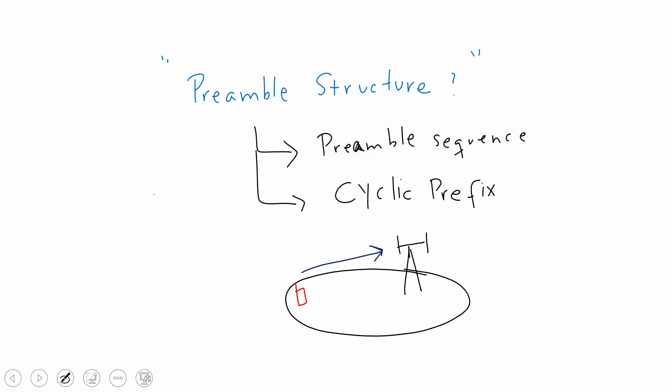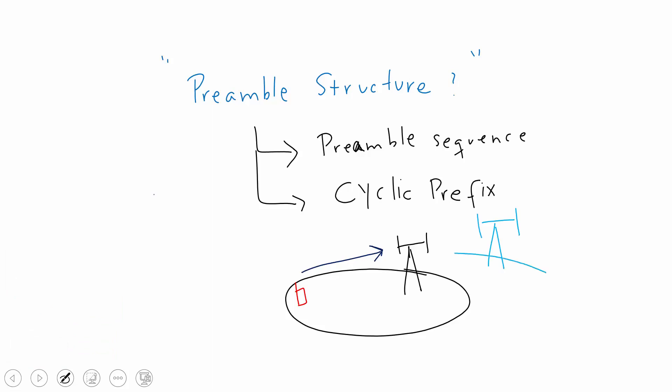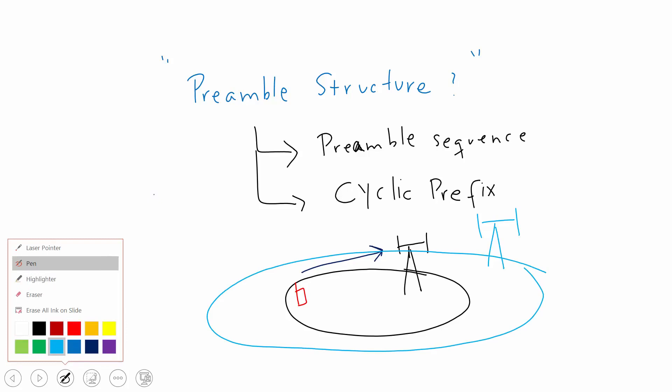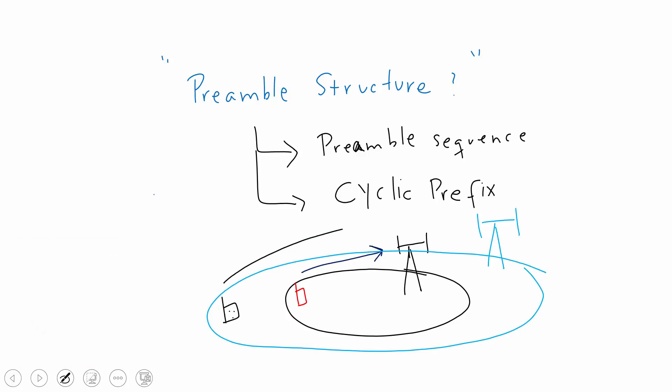The cyclic prefix allows determination of how long a cell is in terms of radius. If a cell is of larger radius - say there is another cell of larger radius - and the user is standing far from the tower making a transmission to that tower, the coverage area or radius of the cell is bigger. For that case, the preamble structure will have a longer cyclic prefix, in order to handle multipath propagation effects and to support cell sizes even up to 15 kilometers.